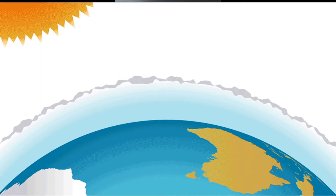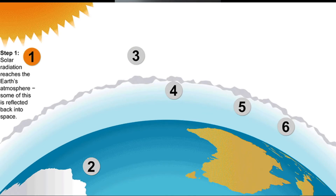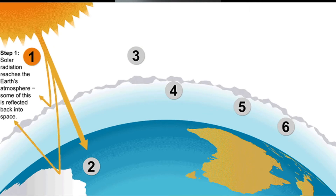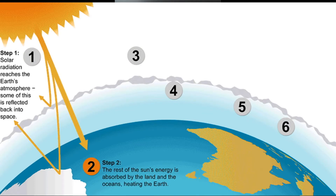So this is how the greenhouse effect works. Step 1: Solar radiation reaches the Earth's atmosphere. Some of this is reflected back into space. Step 2: The rest of the sun's energy is absorbed by the land and the oceans, heating the Earth. Step 3.